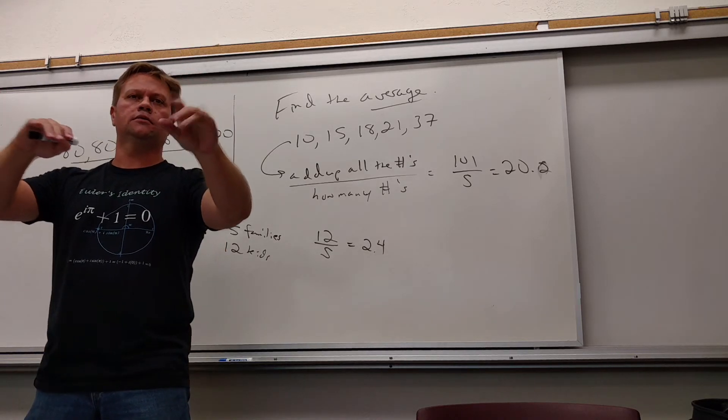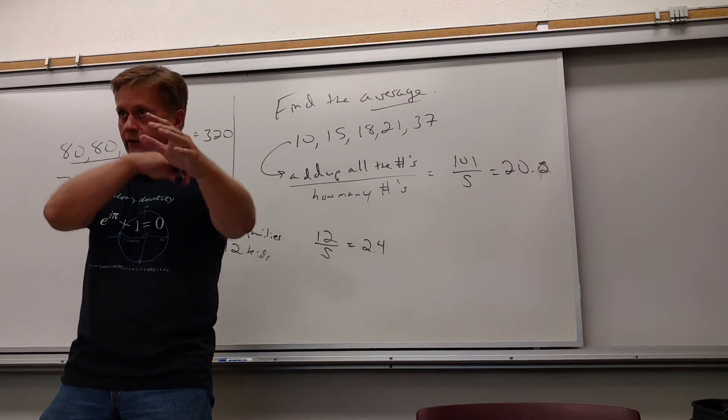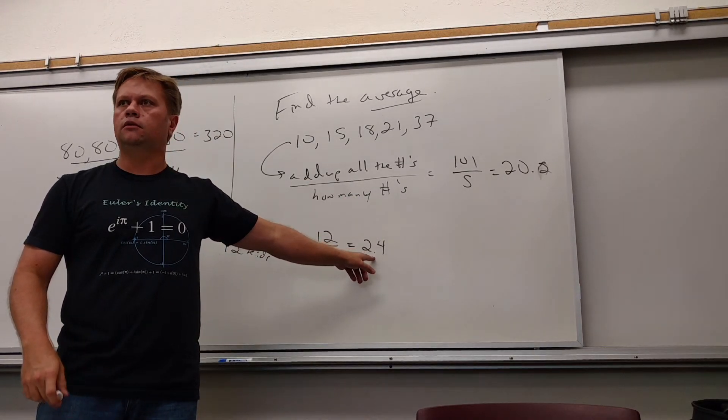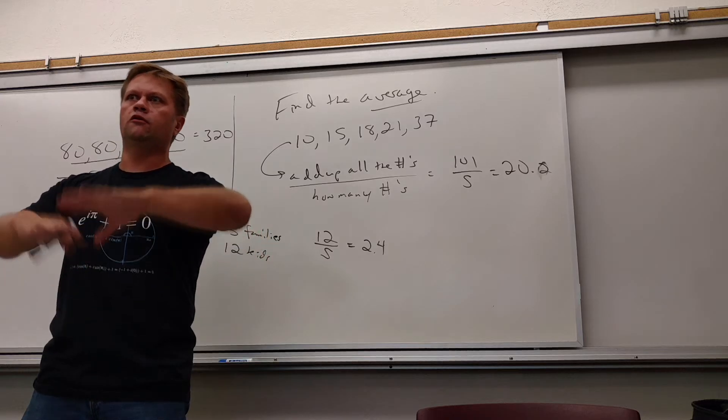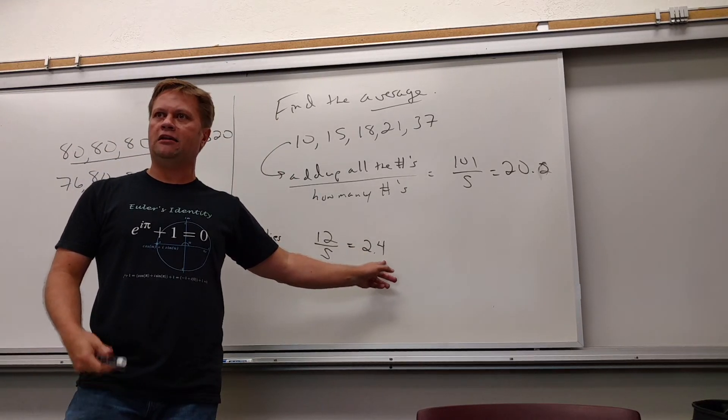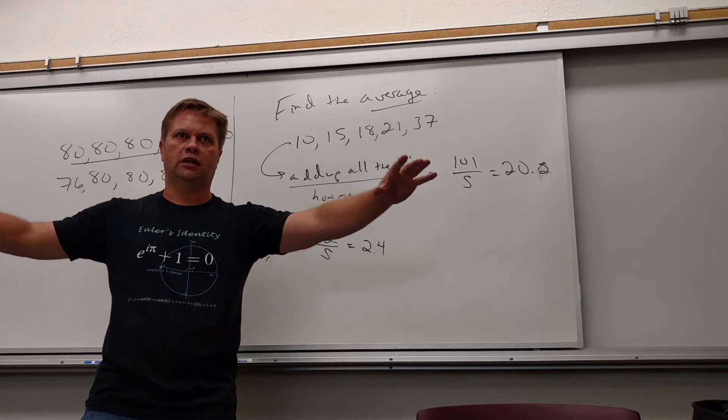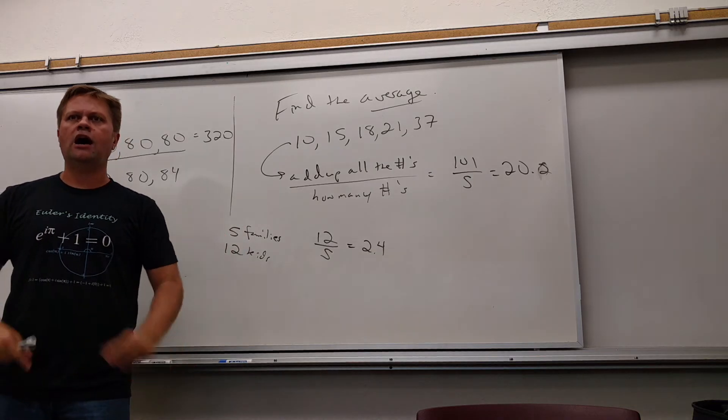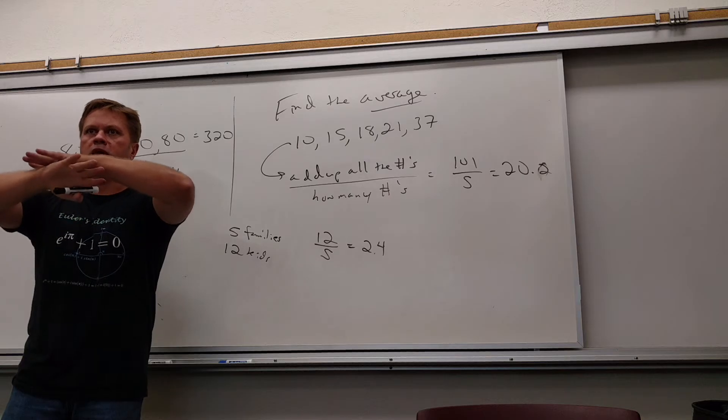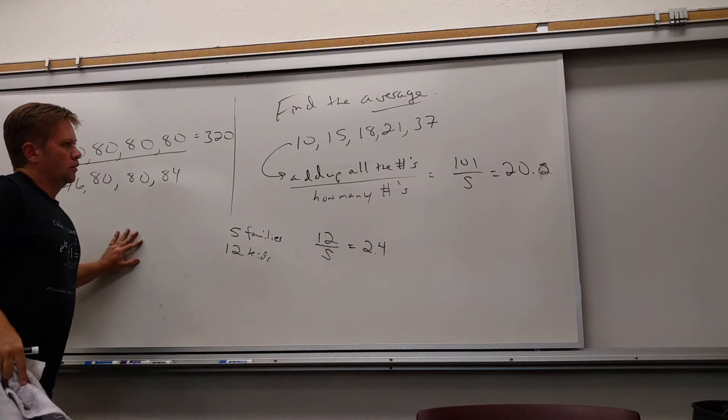So it's not saying that any specific family has 2.4 kids, because that .4 kid is freaking me out. Just trying to imagine what it looks like. Are you guys kind of with me? That's why we put the averages in the decimal section, because averages totally all the time come out as decimals. Even if they're talking about number of kids, don't freak out. This does not mean anybody has .4 of a kid. It just means that's what everybody would have if they were evenly distributed amongst all five families.